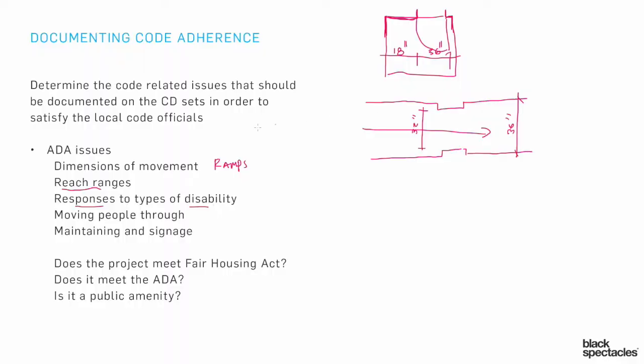Another level of thinking involves maintaining these different systems. A wheelchair lift is a classic example - they sit unused for a long time, then somebody needs it and nobody can find the key to operate it, or it's rusty and doesn't work. Building in the idea of maintenance, using durable systems that can withstand actual use, and finding maintainable solutions - like having the wheelchair lift in a protected area rather than out in the rain - are design issues you want to address in the CD sets, even if you don't need to formally demonstrate them to code officials.